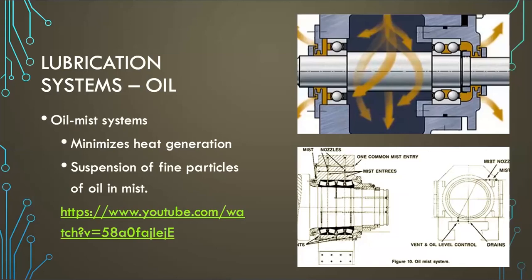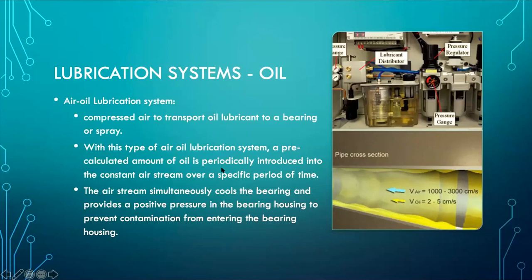Two important lubrication systems in the metal industry are: the oil mist system, where oil is mixed with mystified air and the mist is continuously flowed into the bearing area to lubricate it; and the air-oil lubrication system, which is similar to oil mist but the oil is not mystified — instead, air is mixed with oil in a certain proportion, and oil is pumped in intermittently rather than continuously. The air cools the system while intermittent oil pumping keeps it lubricated.